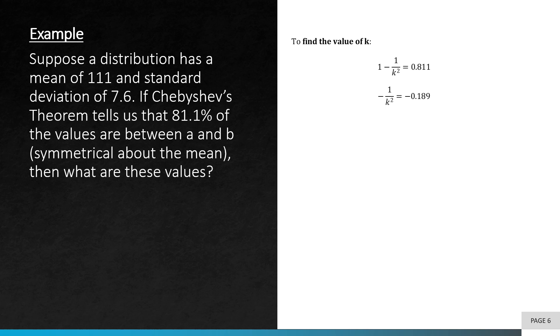To find the values of a and b, we need to find the value of k first. To do so, we use Chebyshev's theorem formula, 1 minus 1 over k squared, and equal it to the percentage that's given to us, 81.1% or 0.811 in proportion form. By using simple algebra, we shift around the unknown, and we can find and solve for k, and k is 2.3.